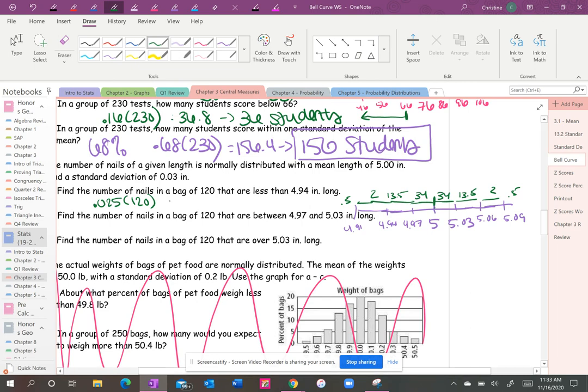Between 4.97 and 5.03, well that's 68 percent. So 81.6 or 81 nails.